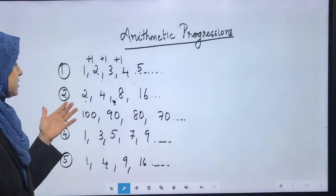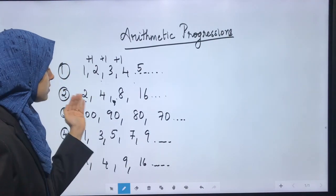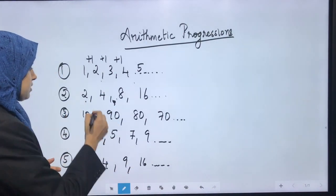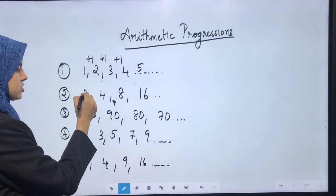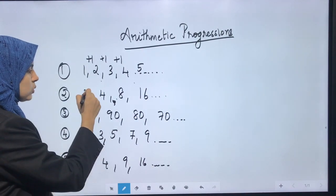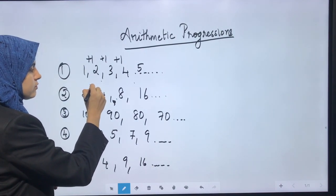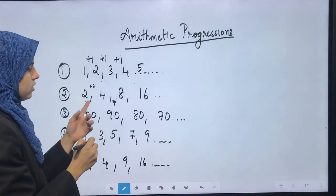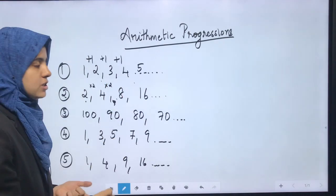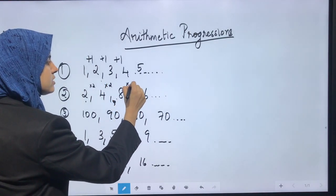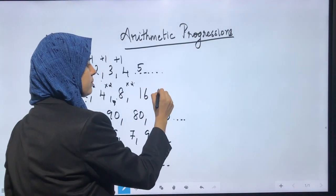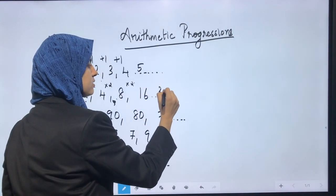In the second example, it follows a pattern where each term is multiplied by 2. So 2 times 2 is 4, 4 times 2 is 8, 8 times 2 is 16, and 16 times 2 gives us the next number, 32.